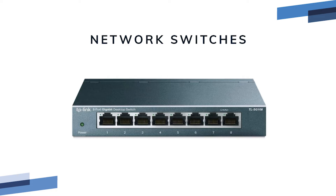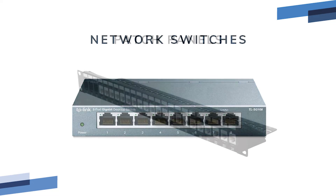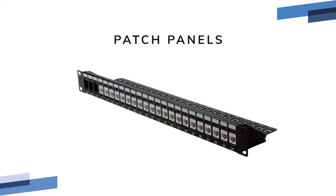A patch panel is installed when a restaurant has wall ports throughout the building. Network cables are run through the walls from the wall port to the patch panel. There should be numbers labeling the ports on the patch panel that match the wall ports. If there are no numbers on either the wall ports or the patch panel, it will be extremely difficult to figure out how your building is wired.